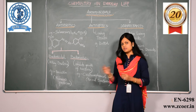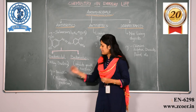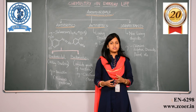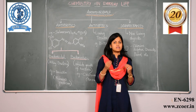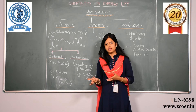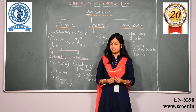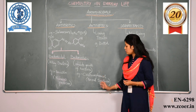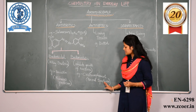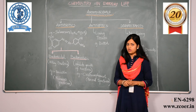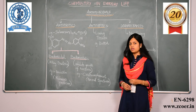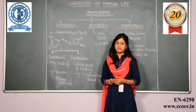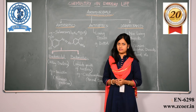The example of narrow spectrum antibiotics is penicillin. Penicillin is effective only on gram positive or gram negative kind of bacteria. Whereas an example of broad spectrum antibiotics is chloramphenicol, which is effective on both gram positive and gram negative kinds of bacteria.